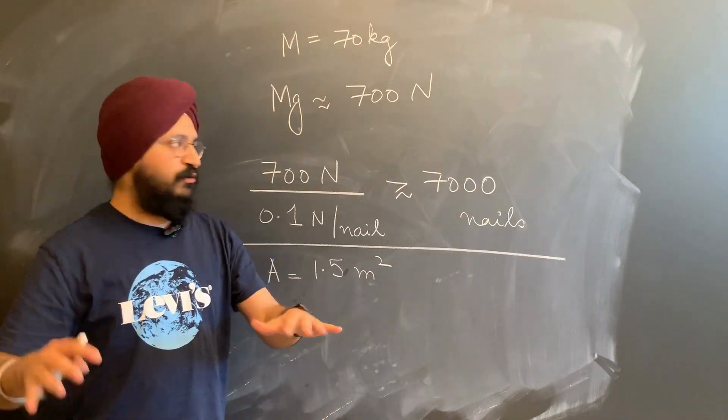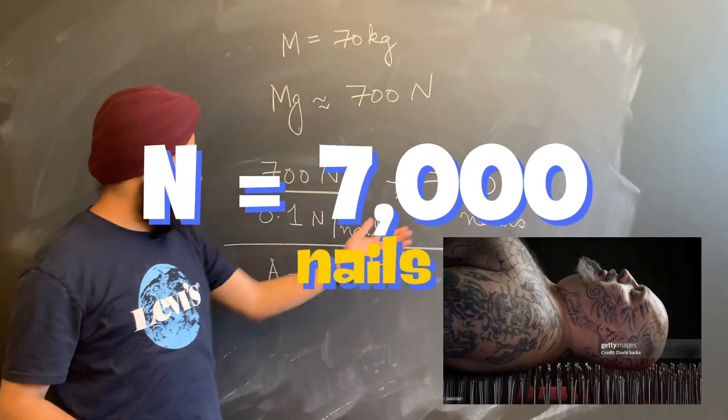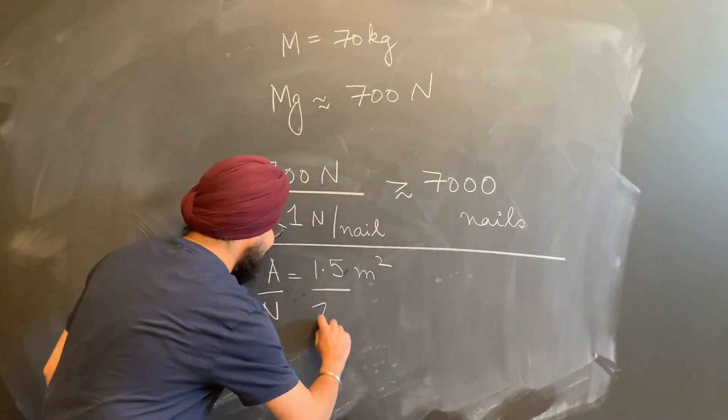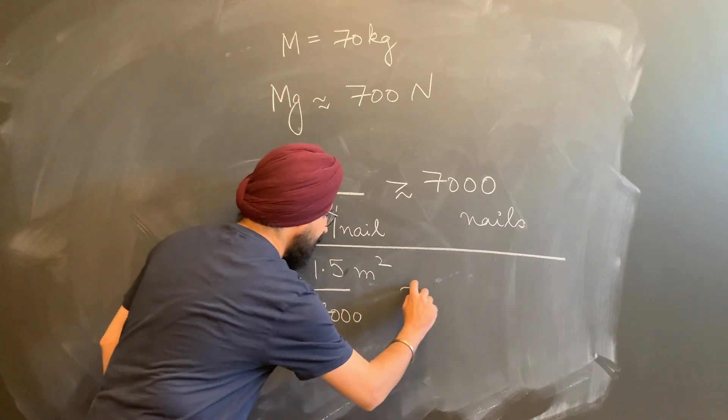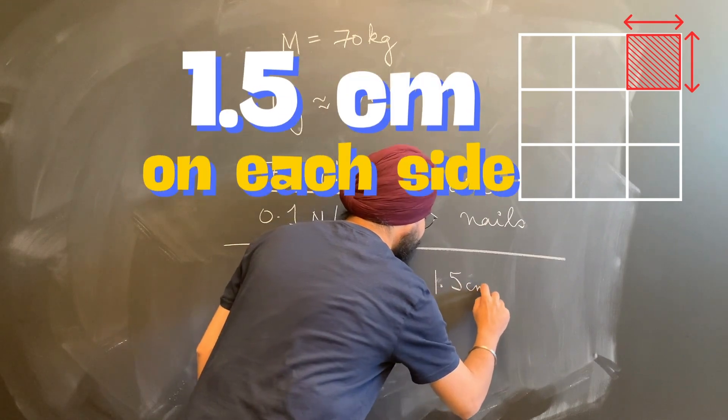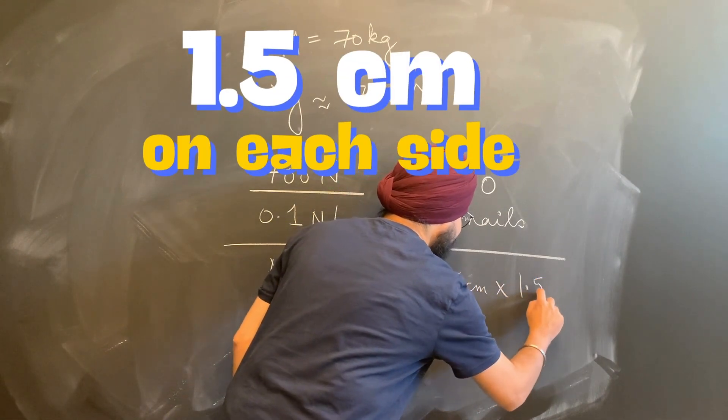If we uniformly distribute all those 7,000 nails over this surface area, we would get roughly an area where each nail is spaced about 1.5 centimeters away from each other.